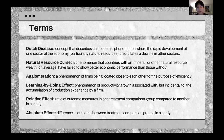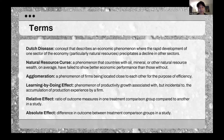Agglomeration means a phenomenon of firms being located close to each other for purposes of efficiency. The learning by doing effect is a phenomenon of productivity growth associated with more experience by firms, especially in manufacturing over time. The relative effect is the ratio of outcomes measured in one treatment comparison group compared to another, and the absolute effect is a difference in the outcome between treatment comparison groups in the study.